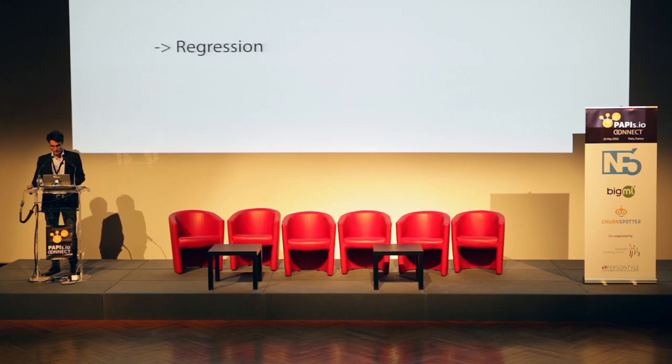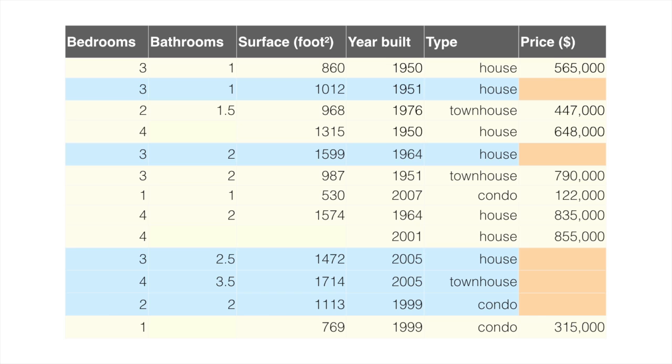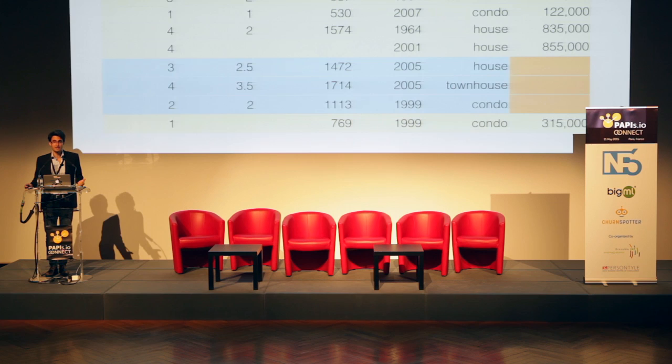Here is some sample data for this use case — bedrooms, bathroom, surface, year built, type of property, and then price. It's like an Excel table where there are some missing values in the price column. Price is the output we're trying to predict, and the rest is the input. The data highlighted in light yellow is the training data used to create the model. You apply the model to the other rows to predict the associated output — the price. You can fill in the missing values. You can sort of see machine learning as a way to fill in missing values in a spreadsheet table.